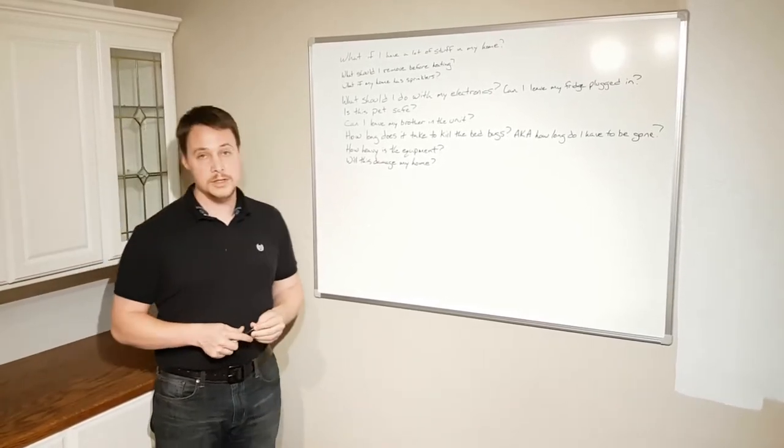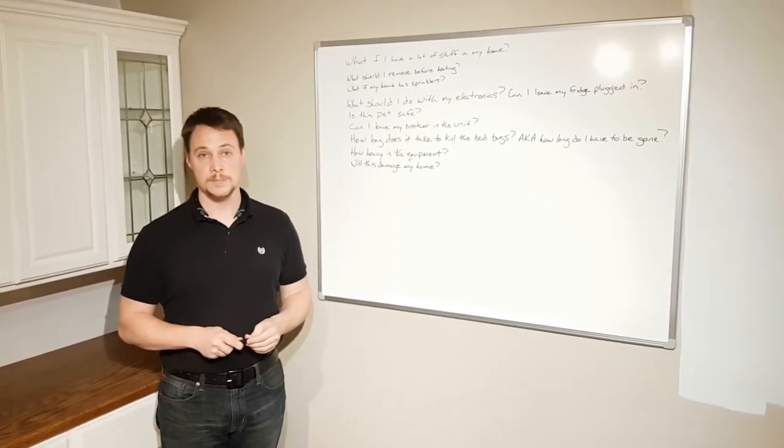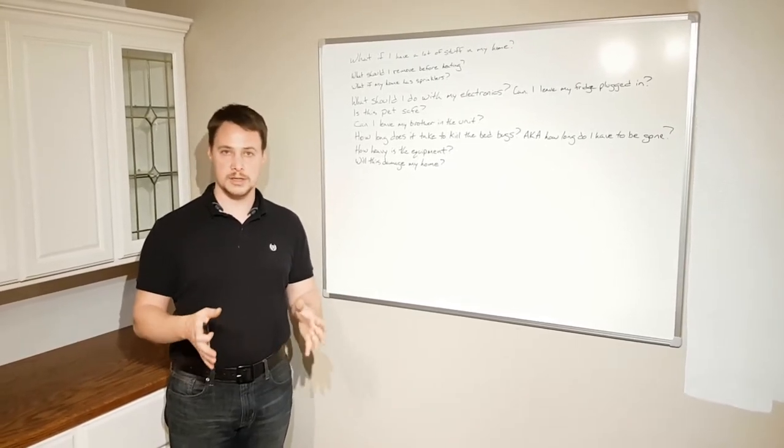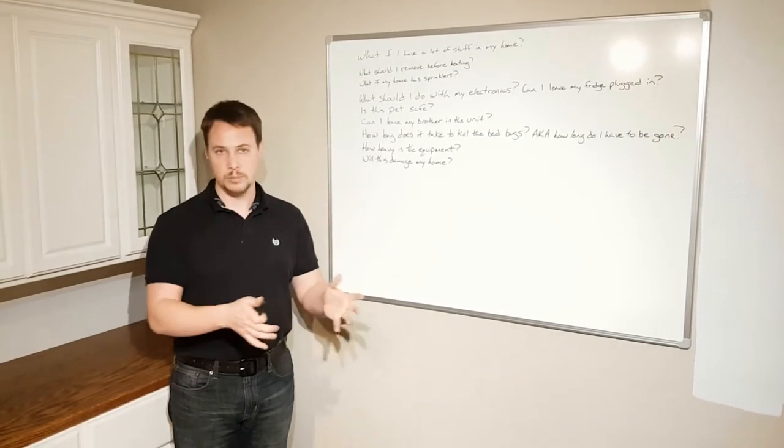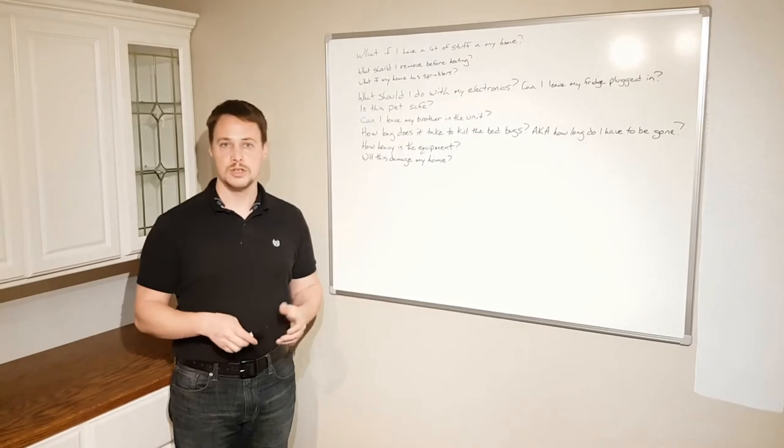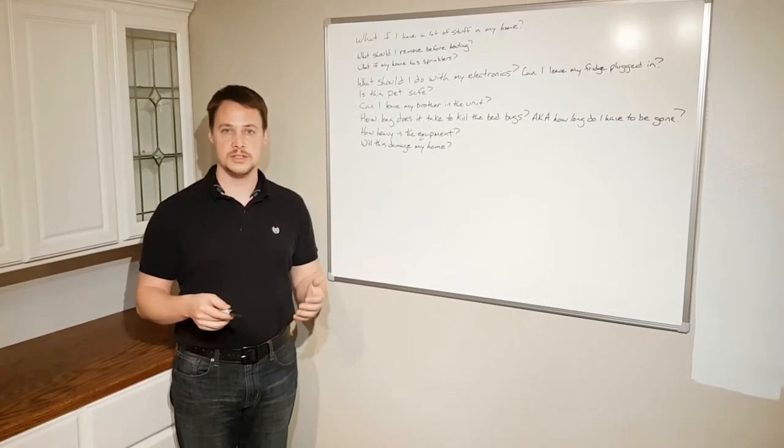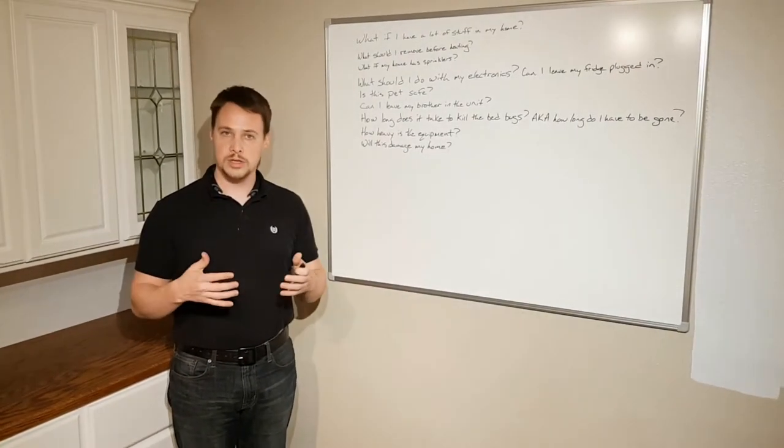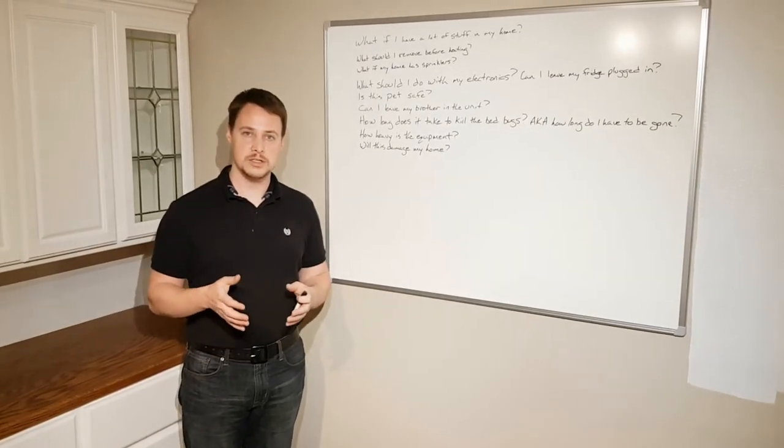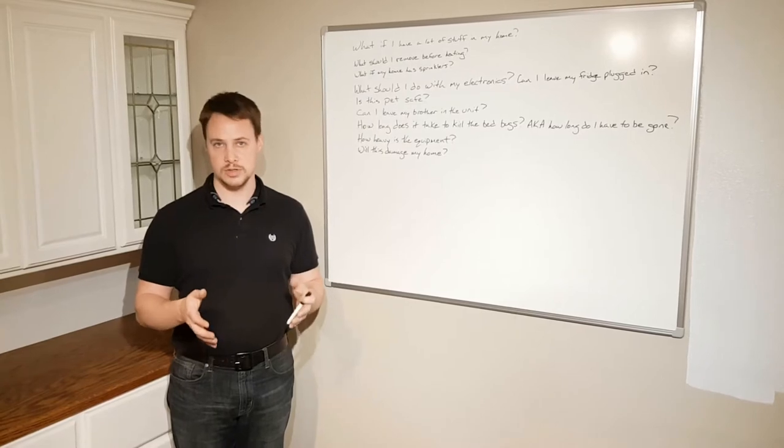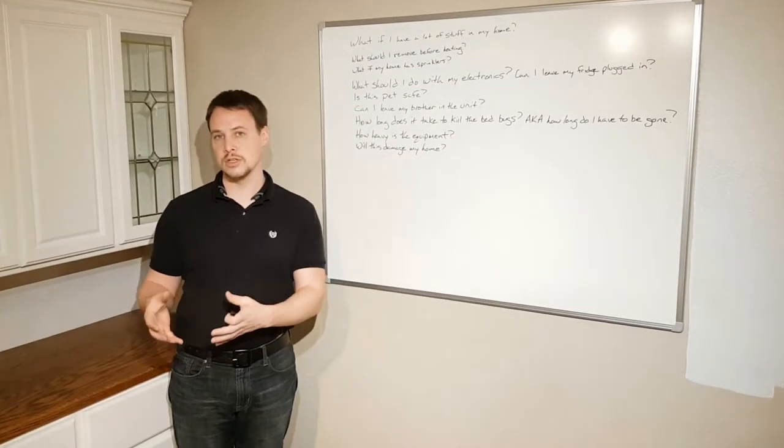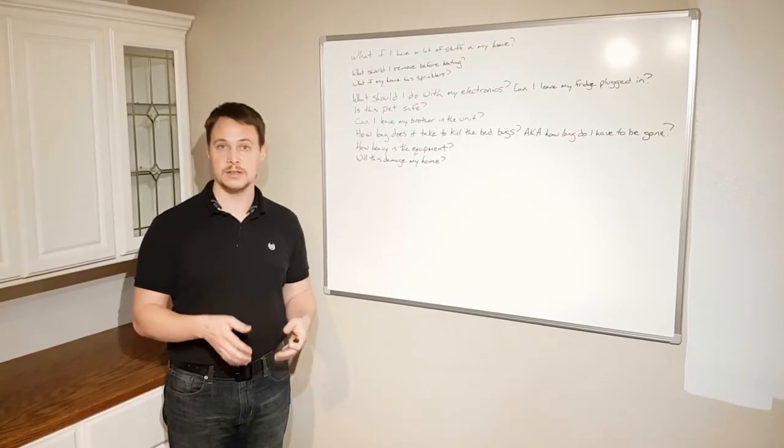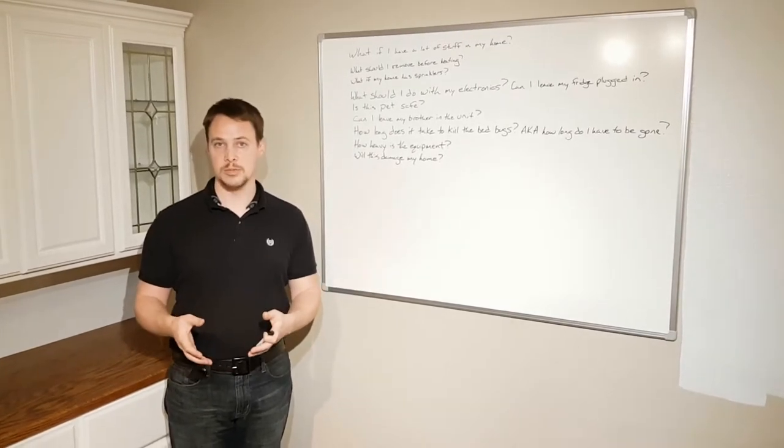Question seven. How long does it take to kill the bed bugs and how long do I have to be out of the unit? Once you get it up to heat, which can take anywhere from an hour to an hour and a half depending on the size of the treatment area, a bedroom might take a little bit less time than maybe a great room. You should leave it at heat for somewhere between six to eight hours before you shut your heaters off and move them to a new treatment area. When you get your units, it's probably a good idea to initially treat the area where you're sleeping. So hit your bedrooms first so that you can move your heaters into, say, the great room and cool your bedrooms down enough so that you can sleep in them that night while leaving your great room to get heated up overnight while you sleep.